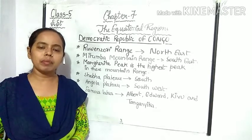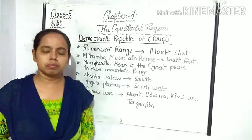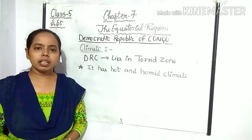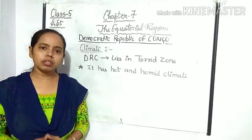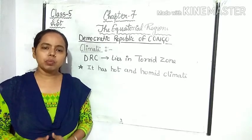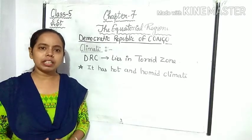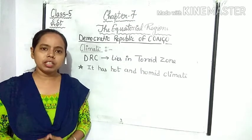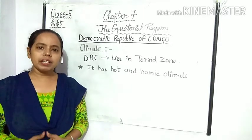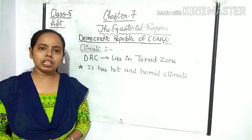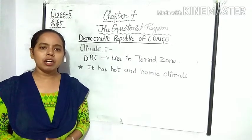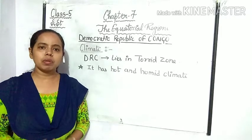Now let's know about the climate of the Democratic Republic of Congo. The Democratic Republic of Congo lies in the torrid zone. As mentioned, in this region sun rays fall continuously throughout the year, so the climate here is always hot and humid. यहां पर seasonal monsoon होते हैं, मतलब कि जब monsoon का season आता है, तो यहां पर बारिश भी होती रहती है।